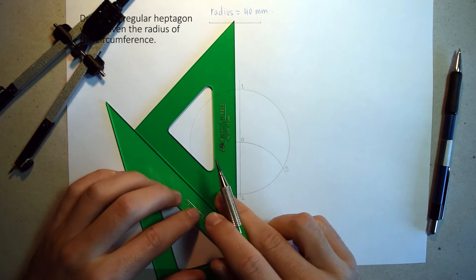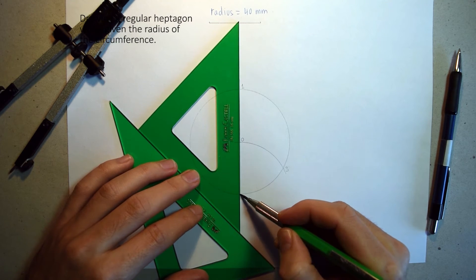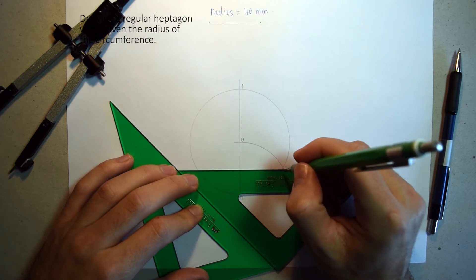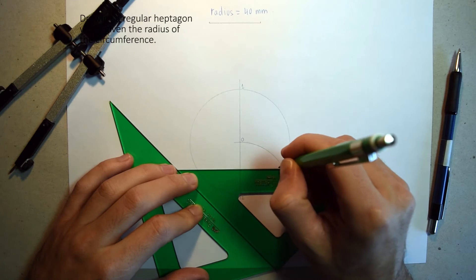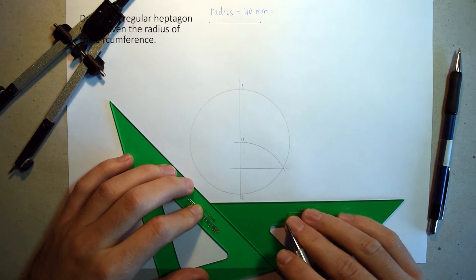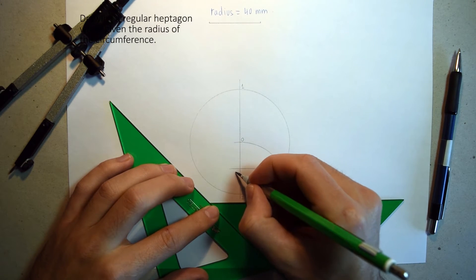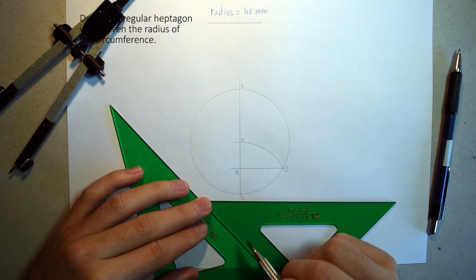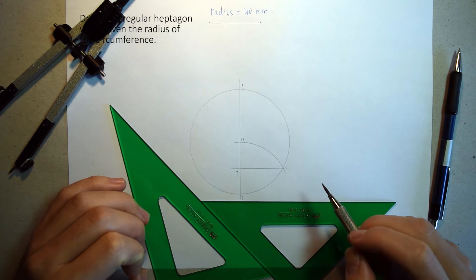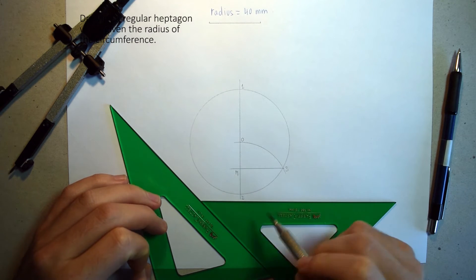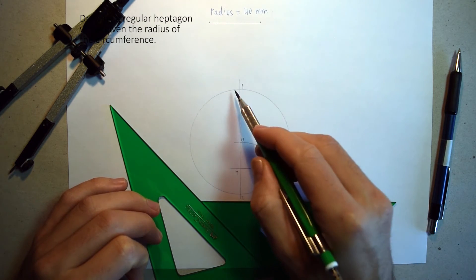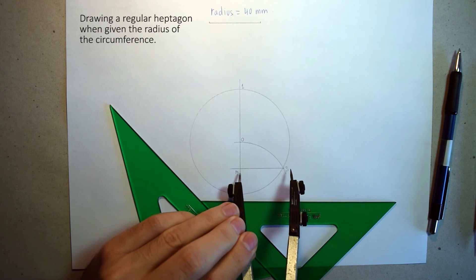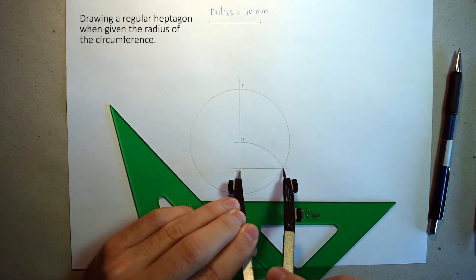We trace the perpendicular line passing through 3. This line gives us point M. The segment M-3 is the segment we need because the length of this segment is the length of the side for the regular heptagon.